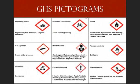A pictogram means a graphical composition that includes a symbol plus other graphic elements such as a border, background pattern, or color that is intended to convey specific information. The HAZCOM GHS pictograms convey health, physical, and environmental hazard information assigned to a single GHS hazard class and category. All hazard pictograms used in GHS should be in the shape of a square set at a point, or simply a diamond-type orientation.